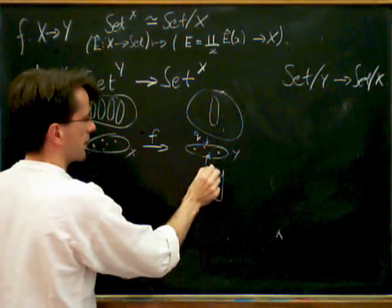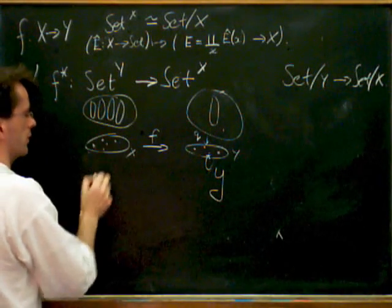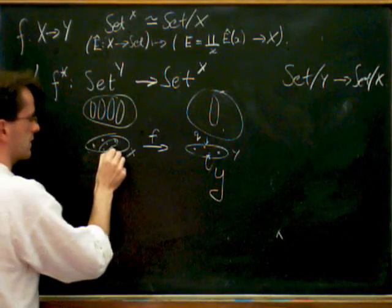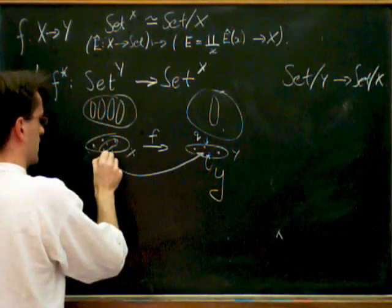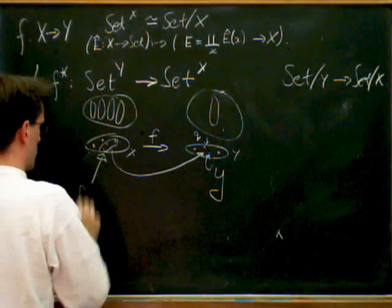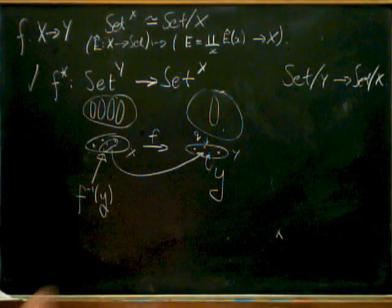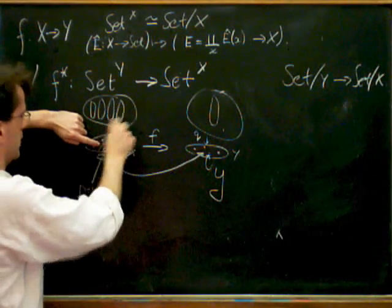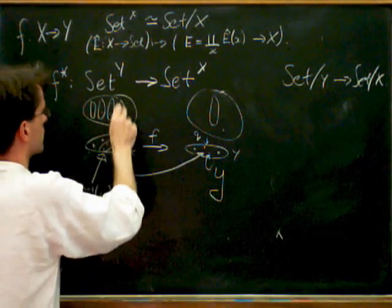Well, I've got this map f and I've got a bundle over X. So I guess associated to this point y, I automatically have lots of points which map to it. So I've got some set here sitting inside X, which all get sent to y. So this is the set here, this is the set f inverse y. OK, and sitting above this set, I've got all the collection of the fibres there. I've got, in this case, I've got, say, three fibres.